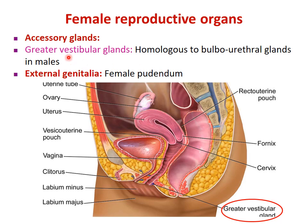In females, there are greater vestibular glands, which are homologous — meaning the counterpart — to the bulbourethral glands in males. Just like the bulbourethral gland is embedded within the urogenital diaphragm muscle, this becomes the female greater vestibular glands. External genitalia in the female is called the pudendum.